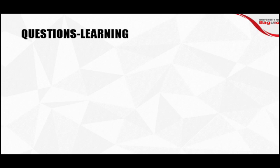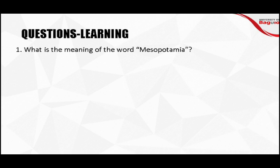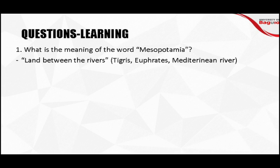The way we're going to discuss this is through questions and learning, so we have a simpler way to understand the contribution of these different ancient civilizations. The Neolithic era led to civilization particularly in Mesopotamia. Mesopotamia means 'land between the rivers' — specifically the Tigris River, the Euphrates, and the Mediterranean River. This Mesopotamia is considered to be the start, or the cradle, of the first civilization.